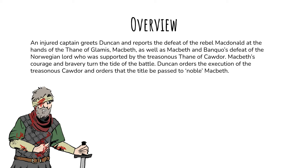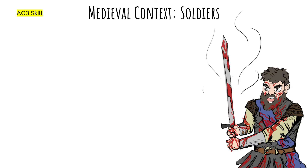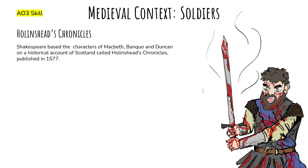Because the scene deals with Macbeth's abilities as a soldier, it is important to reference the context of soldiers and warfare in the medieval period in which Macbeth is set. This is marked on your GCSE exams as an AO3 skill, which assesses your ability to understand how the play relates to the context in which it was written. Shakespeare based the characters of Macbeth, Banquo, and Duncan on a historical account of Scotland called Hollinshead's Chronicles, published in 1577.